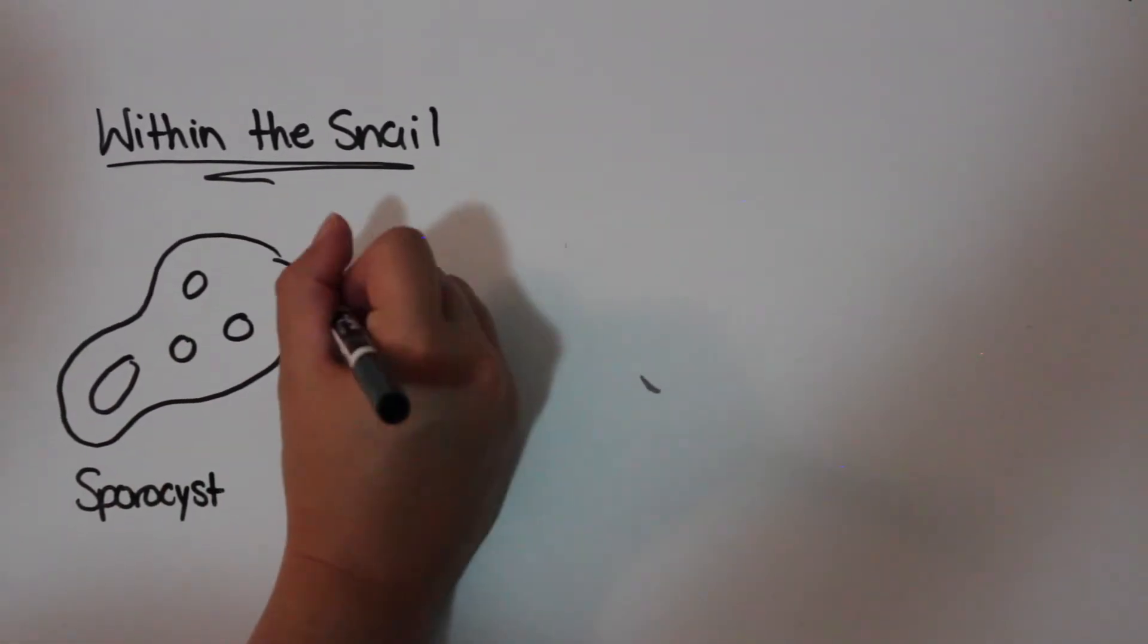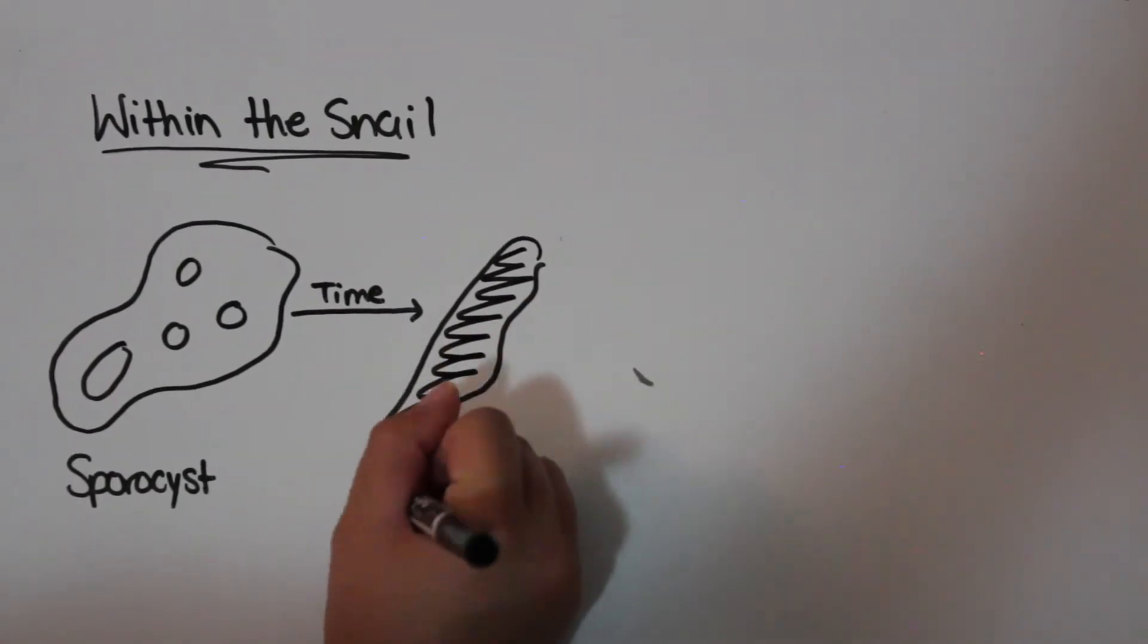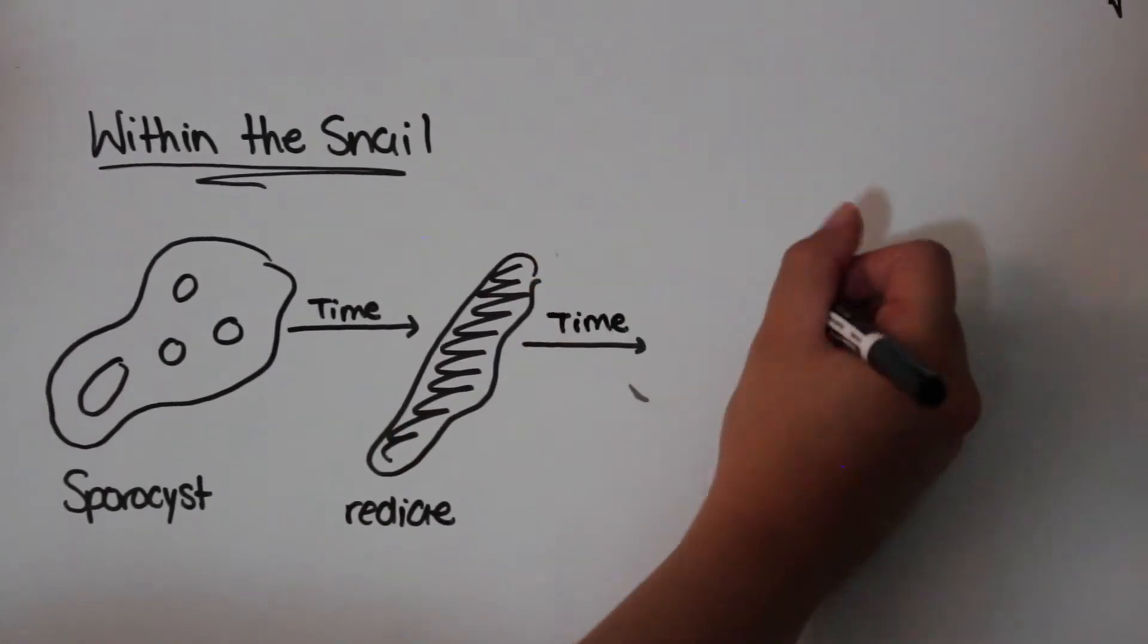Sporocysts contain germinal cells and these become radii, which are 1-3mm long. Multiple generations of radii can occur.